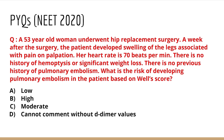Her heart rate is 70 beats per minute. There is no history of hemoptysis or significant weight loss, and there is no previous history of pulmonary embolism. The question asks: what is the risk of developing pulmonary embolism in this patient based on the Wells score — low, high, moderate, or cannot comment without D-dimer values?